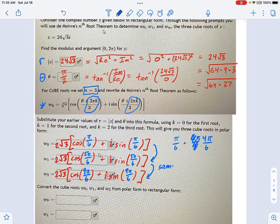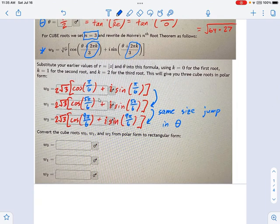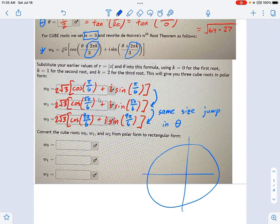In other words, it is the same size jump in theta every time. Once you figure out the size of the jump, this formula gets a whole lot easier, because we don't need to do the k stuff and all that.